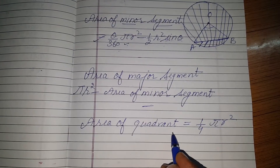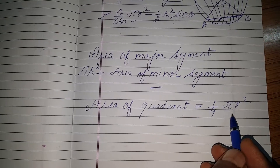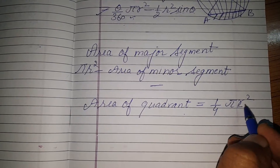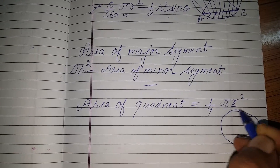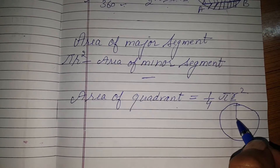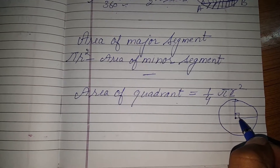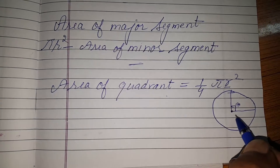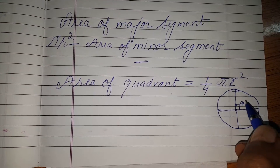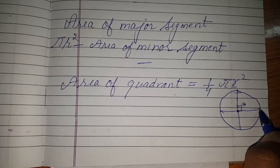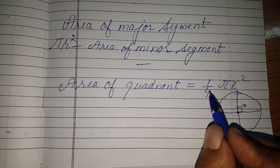Area of quadrant is 1 by 4 pi r square. What is a quadrant? It is the fourth part of a circle. This radius and this radius form a 90 degree angle. Suppose you divide a circle into four equal parts — each one part is a quadrant, which is one fourth of the circle.